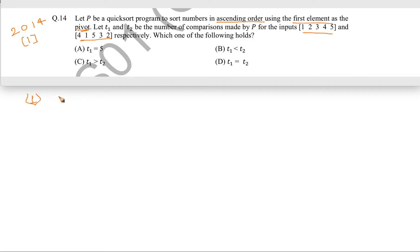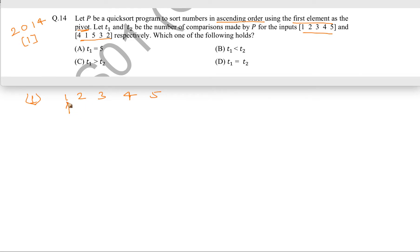The first input is 1, 2, 3, 4, 5. Since the first element is the pivot, while partitioning the first time, the pivot is going to be 1. We can clearly see that 1 is the smallest element, so all elements after the partitioning process will lie on the right side. The number of comparisons needed: 1 is compared to 2, 3, 4, and 5 — that is 4 comparisons.